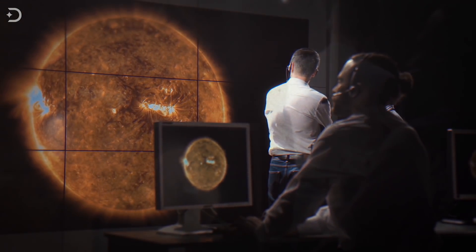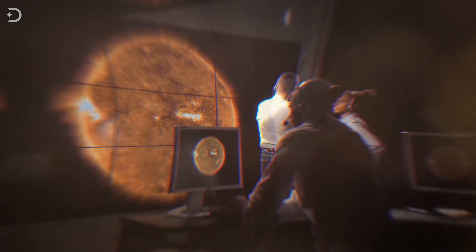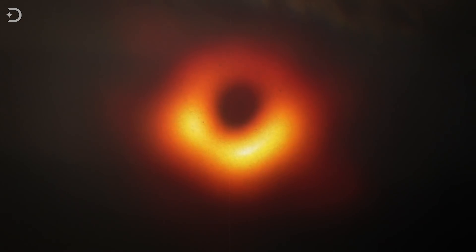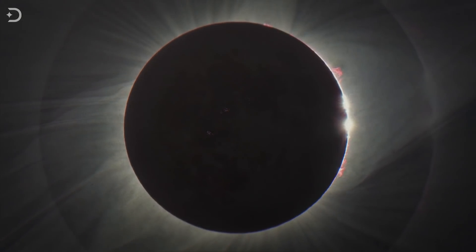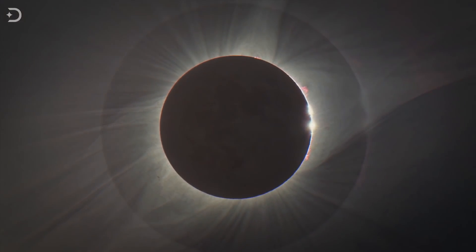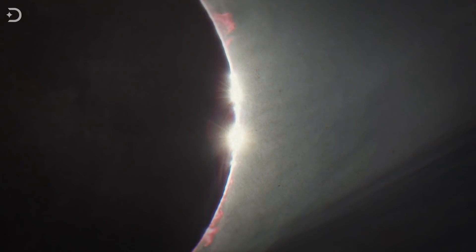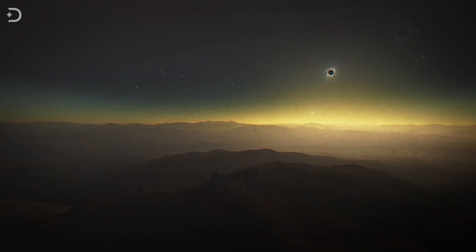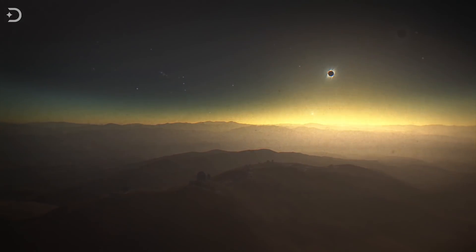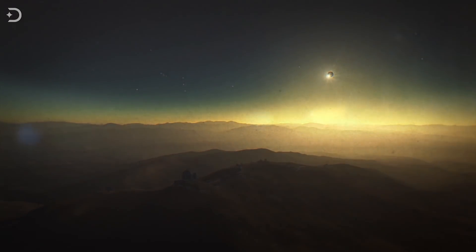Scientists have finally done what was once thought impossible. They captured the first image of a black hole. But now that black holes have become easier to spot, researchers have found one hiding very close to Earth. Is it dangerous? Is it headed our way? Are there any other black holes out there lurking close to us?